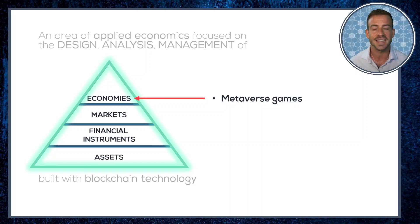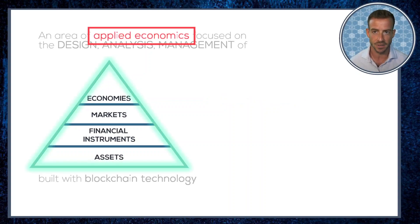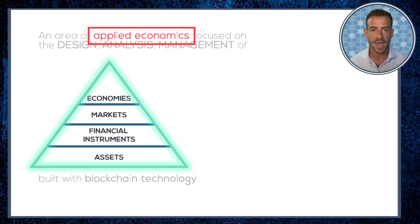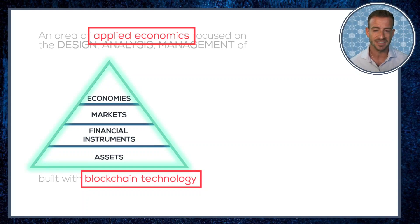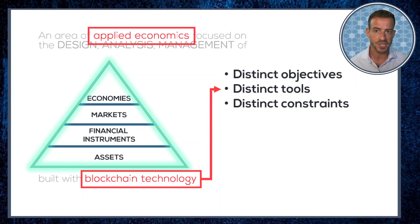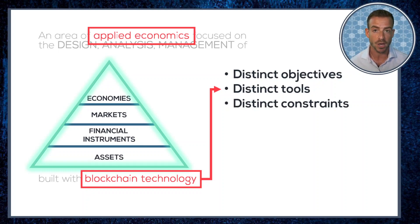All of these objects and systems are products of deliberate human engineering and design — and that's what makes them part of applied economics, which is itself distinguished from economics because our abilities to intervene in economic systems have historically been very limited, either for practical or ethical reasons. So why distinguish tokenomics as a distinct area of applied economics? It's because tokenomics works with a highly distinct set of objectives, tools, and constraints that meaningfully sets it apart from other areas such as policy design, market design, and even traditional video game economy design.